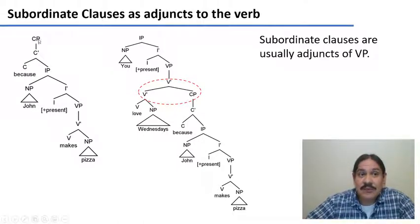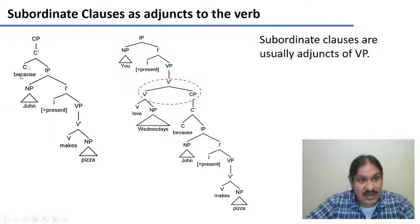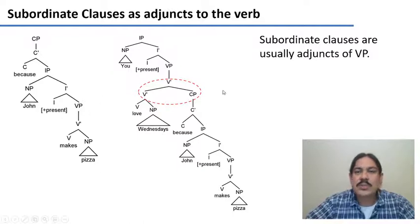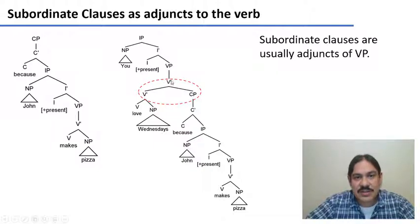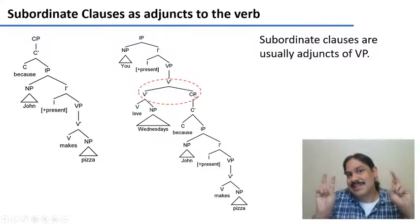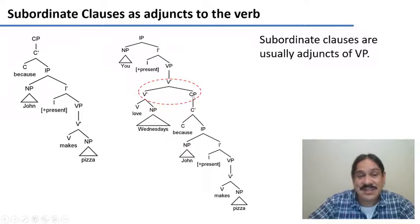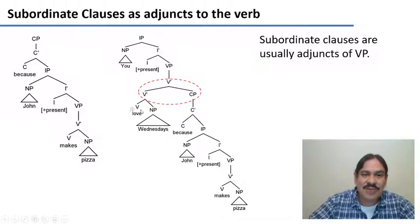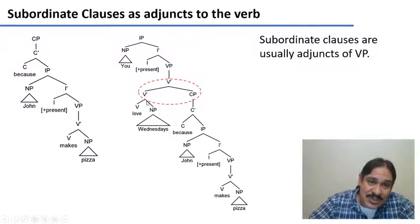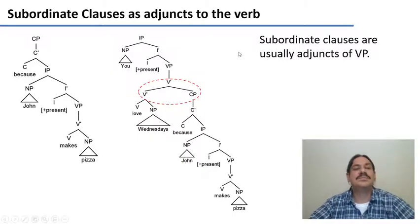This is what a CP would look like for a subordinate clause. It has a head — which is 'because' — and then it has a fully inflected phrase, like 'John makes pizza,' conjugated for the present. You would put it in an adjunct position, so you would generate an extra V-bar that projects the adverbial complement phrase — the subordinate clause 'because John makes pizza' — and this describes the verb 'love.' Notice that the complement position is already occupied, because you are loving the direct object 'Wednesdays.'